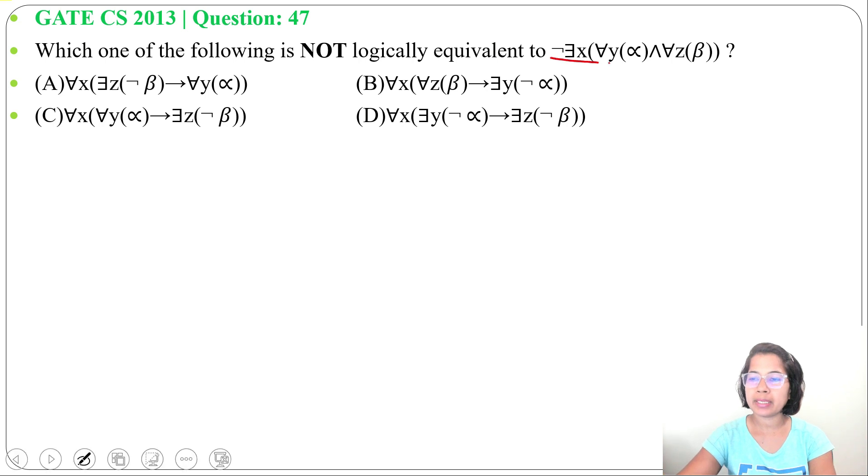Let's first simplify it. Negation of there exists X for all Y, alpha and for all Z, beta. We can take this negation inside. When we take negation symbol inside, this existential quantifier will change to universal quantifier.